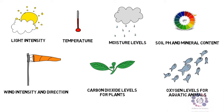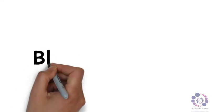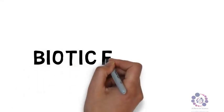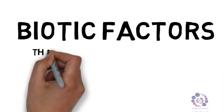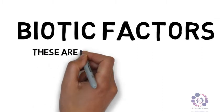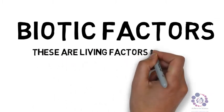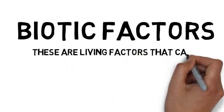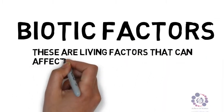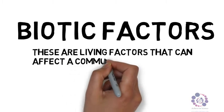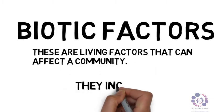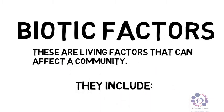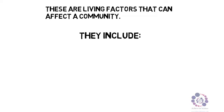These are examples of abiotic factors. Next, let's look at biotic factors. The definition: these are living factors that affect a community. Let's look at some examples of biotic factors.